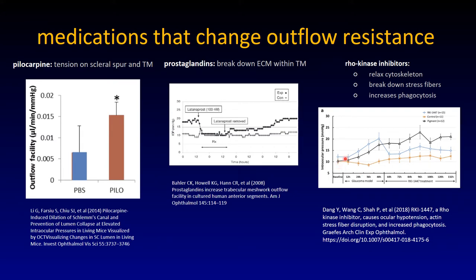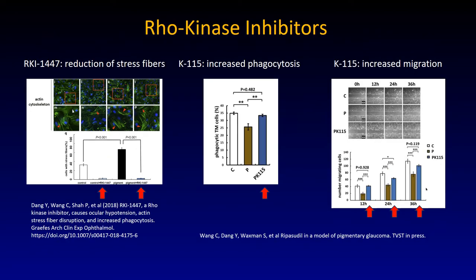In our porcine eye tissue culture model with induced ocular hypertension from low-grade pigment dispersion, pressure drops rather significantly — the blue line — when the Rho kinase inhibitor RKI1447 is given. The question is: why does this lower pressure? The trabecular meshwork remains an enigma. RKI1447 profoundly reduces stress fibers and really does alter the cytoskeleton quite dramatically.